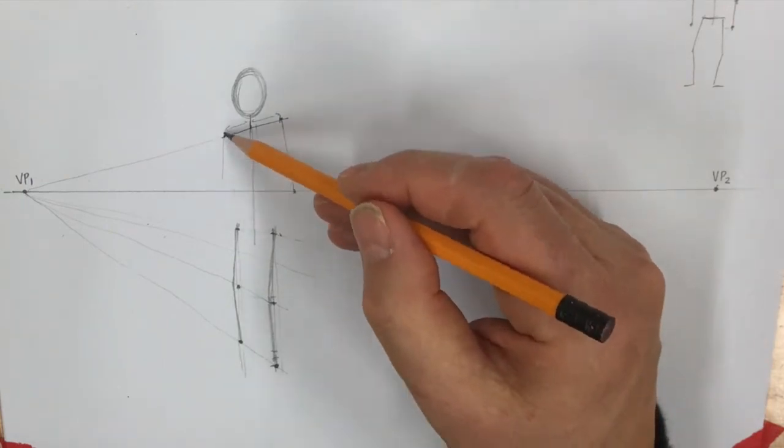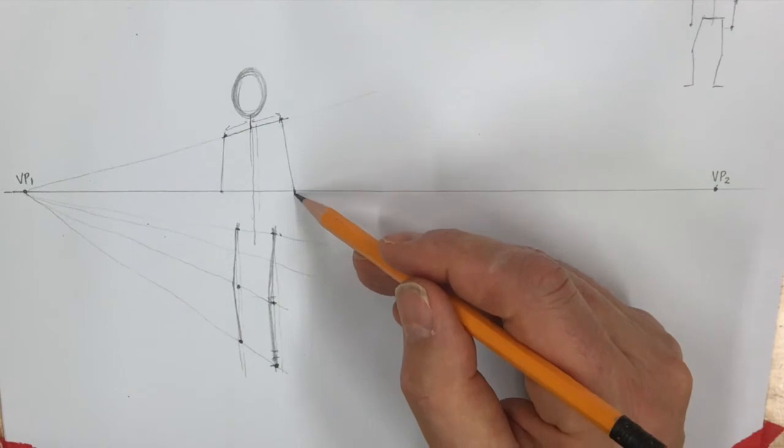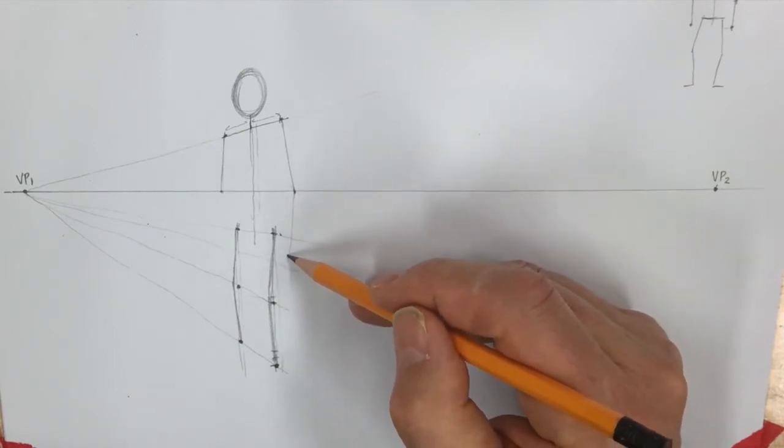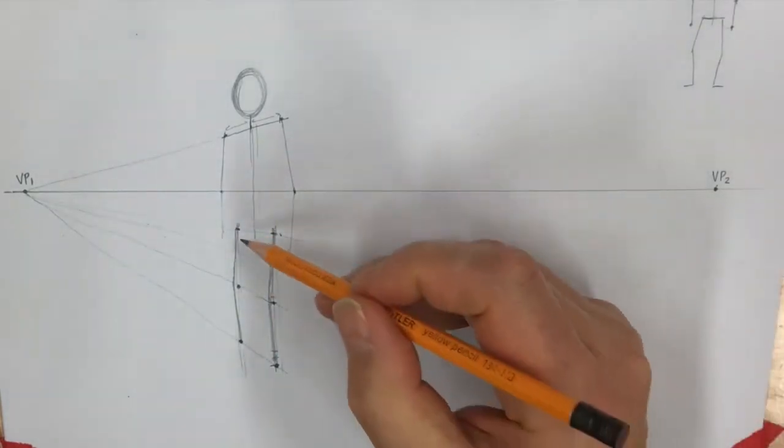I'm going to actually put the elbow at the horizon, and I'll do the other elbow obviously at the horizon too, and bring the forearm down here to about just above the midpoint of the thigh. Same over here, and that's my basic skeleton.